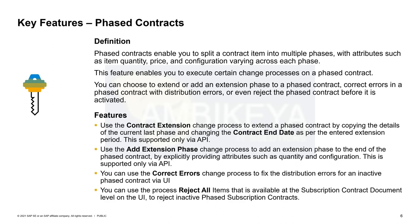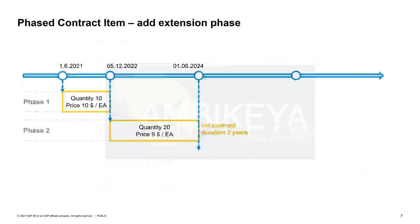What we now additionally provide: if such a phased contract comes to an end, you can either extend the last phase — copying the last phase and setting a new contract end date — or if you want different parameters, such as going back to silver with a thousand seats, you would use an add-extension phase to put in an additional contract phase at the end. Additionally, when a phased contract runs into a distribution error, you can now correct errors by partially opening it in the UI, and as long as the contract is not fully distributed, you can use the reject-all functionality.